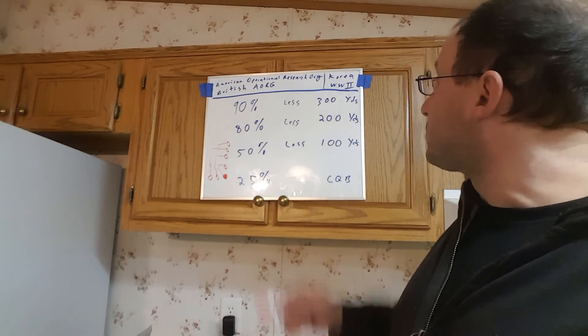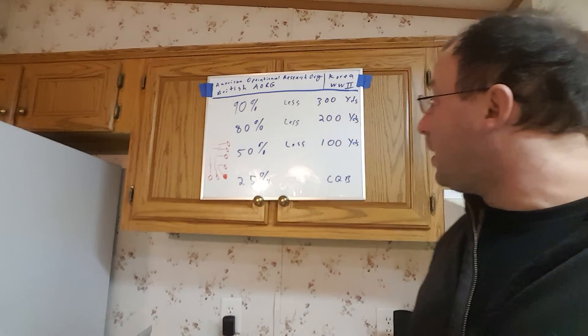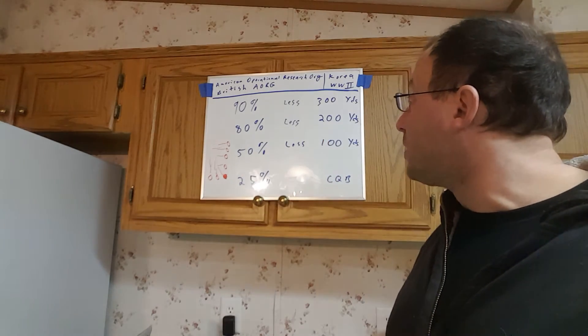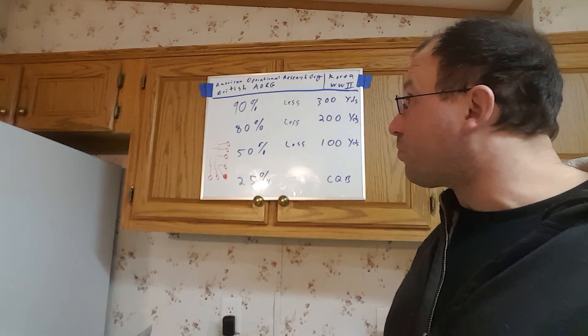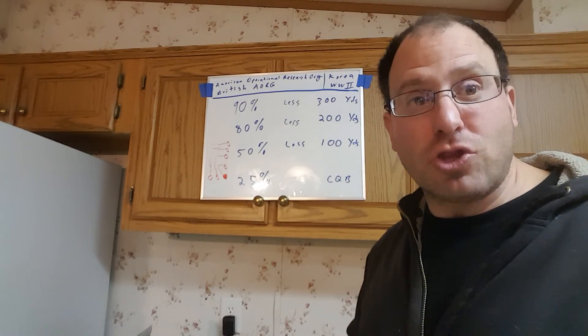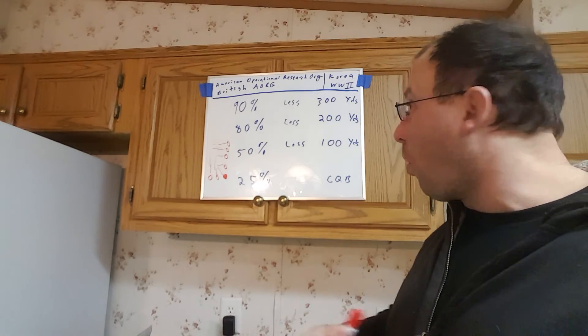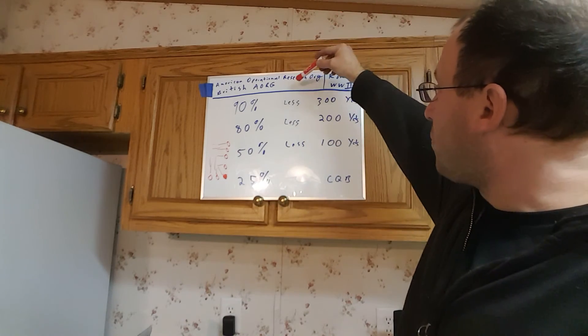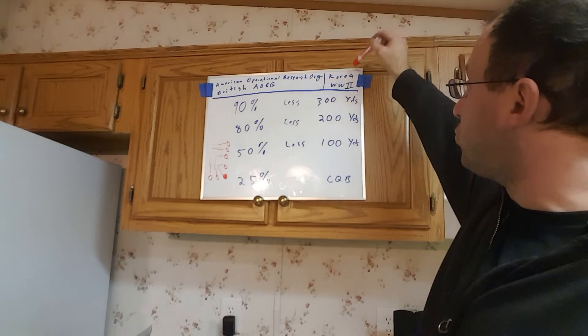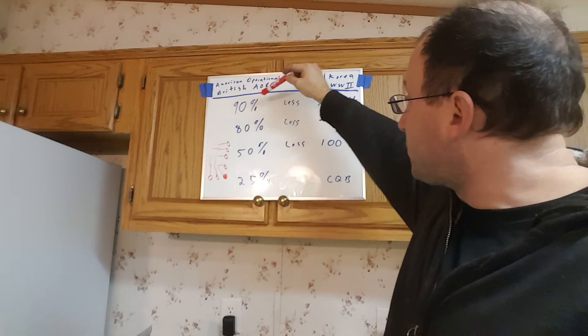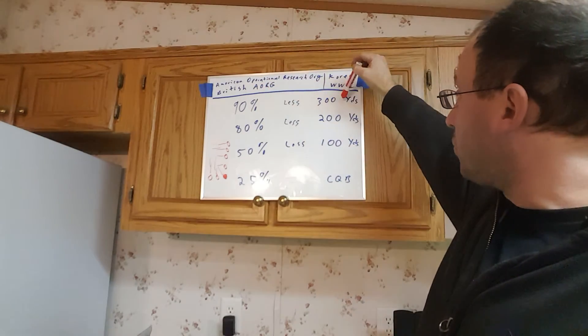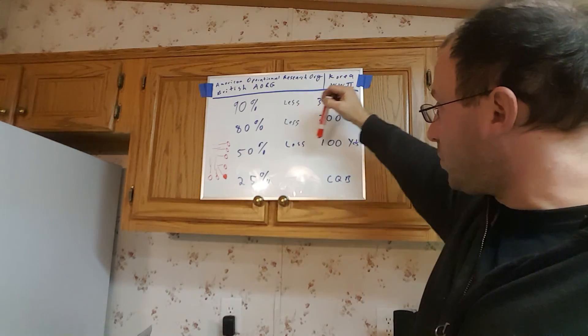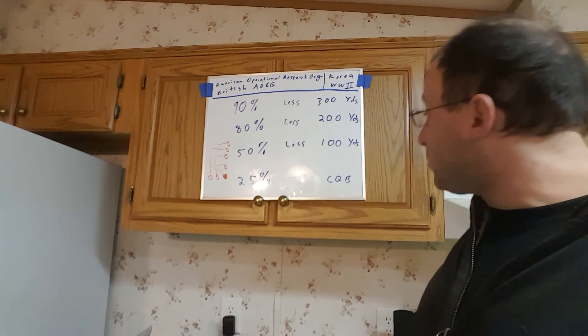So there are my thoughts on this. This is the historical data. And I think it would be very useful for us to keep this in mind for our militia plans for this Red Dawn alternate reality that we're talking about. And again these are this is historical data out of World War II and Korea. 90% of the engagements under 300 yards. 80% under 200. 50% under 100. And 25% are going to be CQB.